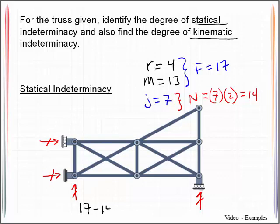Thus, 17 minus 14 will then tell me that I am statically indeterminate to the third degree. So the notion of statical indeterminacy is associated with forces, unknown forces.